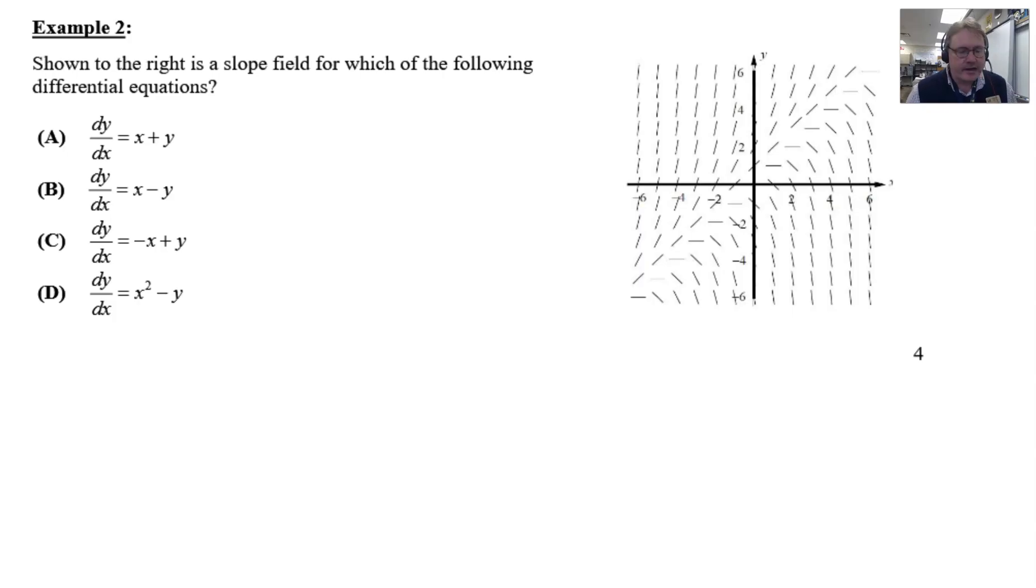Here is our problem. Obviously as you can tell it's a multiple choice. It says shown to the right is a slope field for which of the following differential equations. So basically you have to match. Only one of these differential equations will mimic this particular slope field and we've got to figure out which one it is.